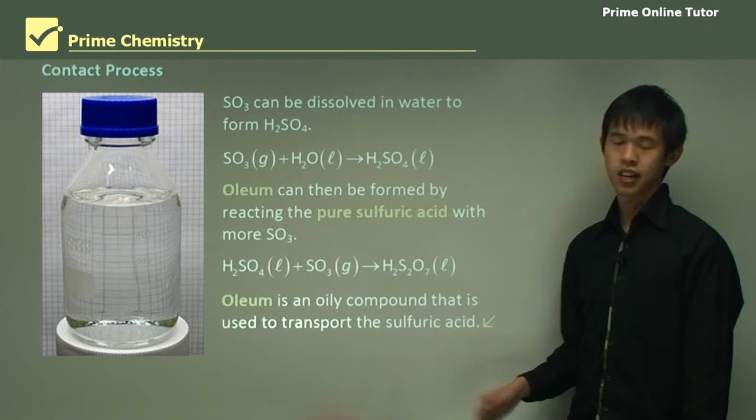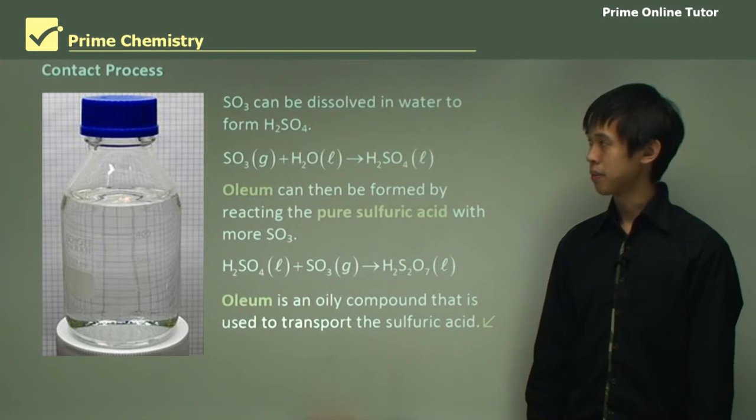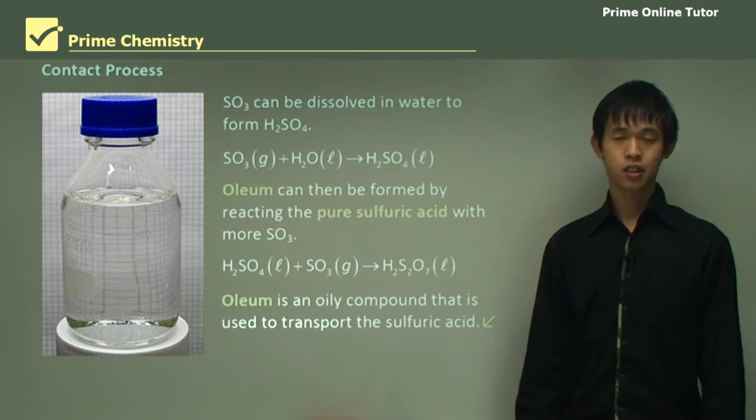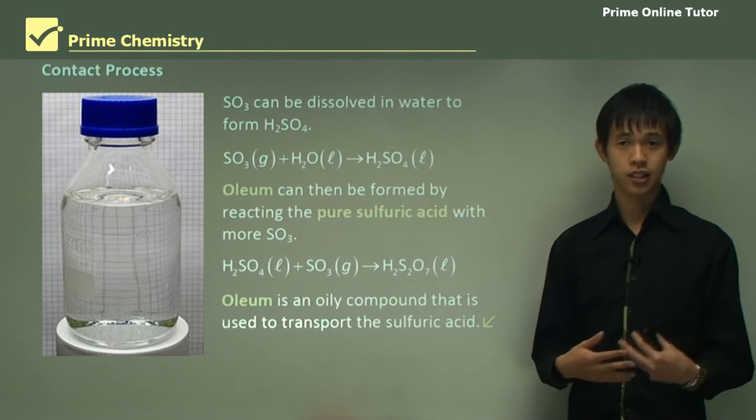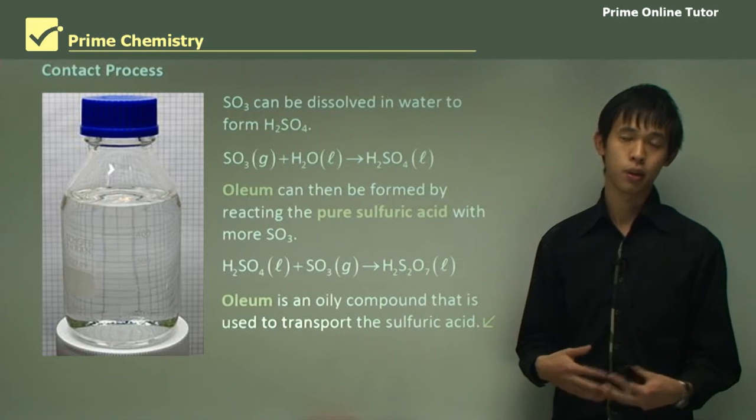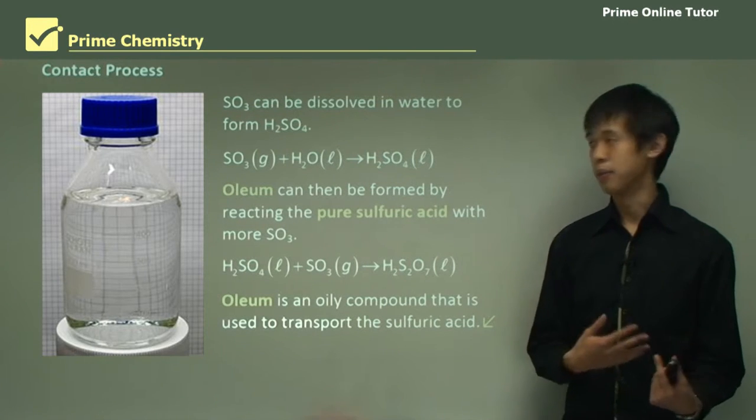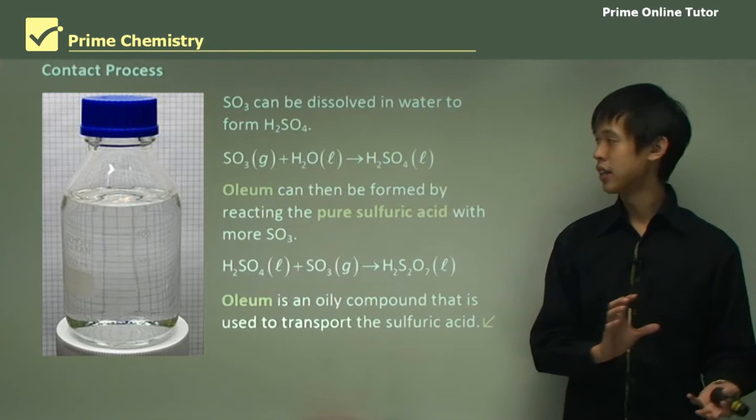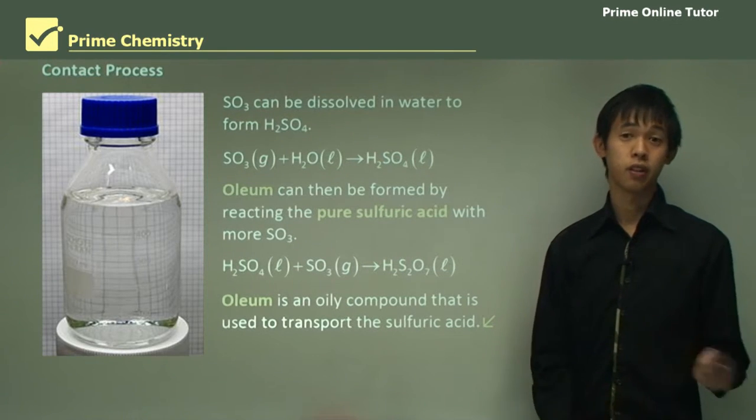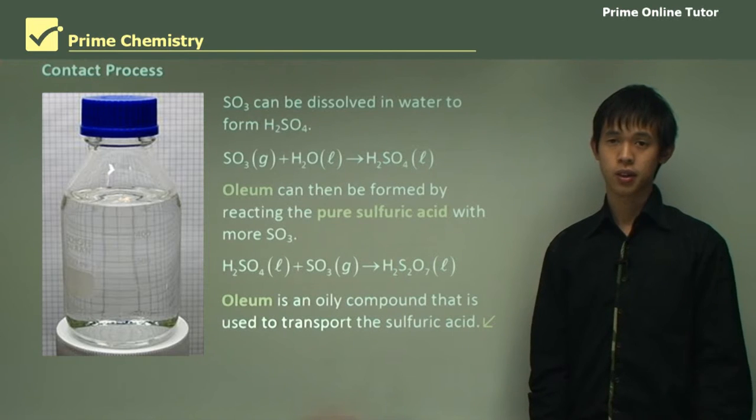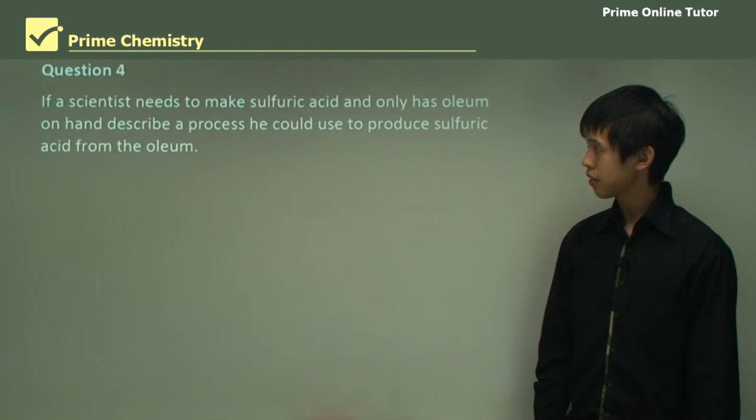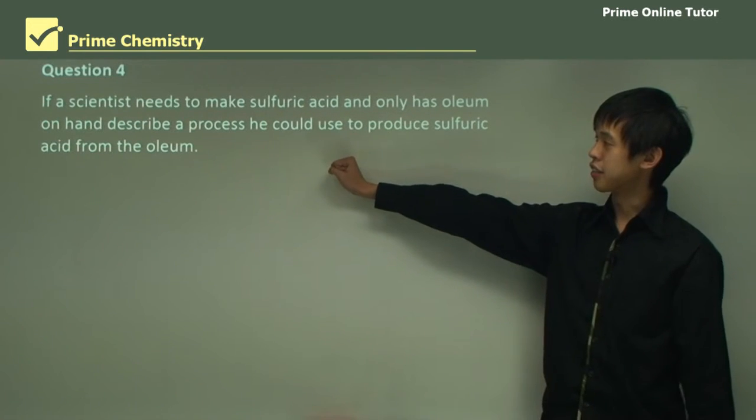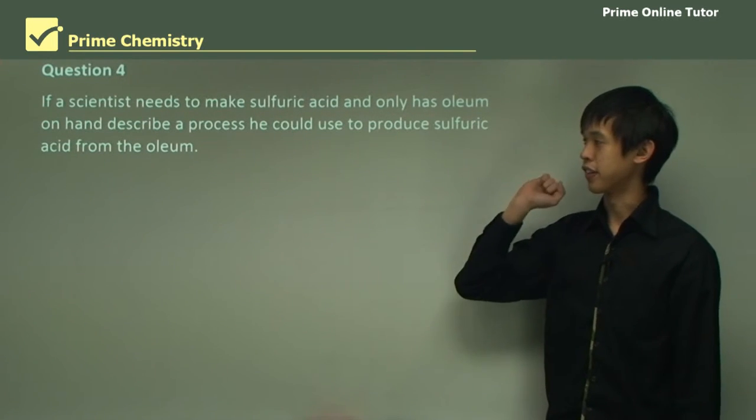That concludes this lesson on sulfuric acid production and the contact process. We looked at all the steps of the contact process and talked about each part and how we complete each part, and also how we transport it once we're done. Now moving to the question segment: if a scientist needs to make sulfuric acid and has oleum on hand, describe a process he could use to produce sulfuric acid from the oleum.